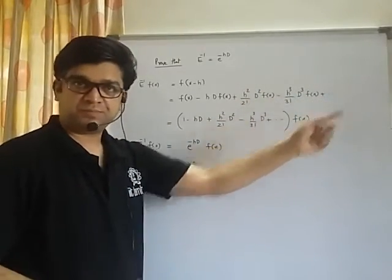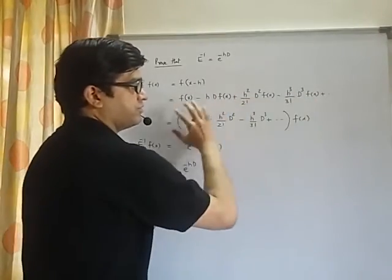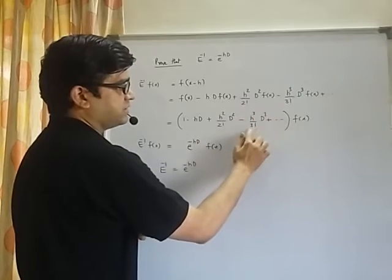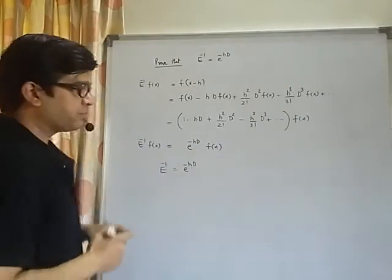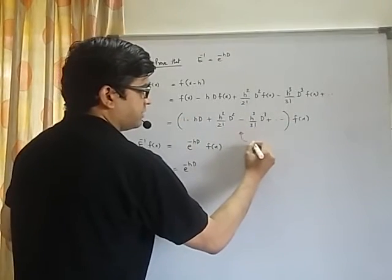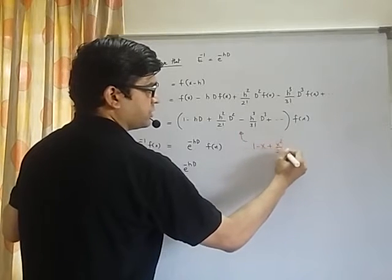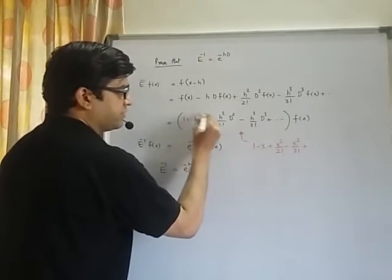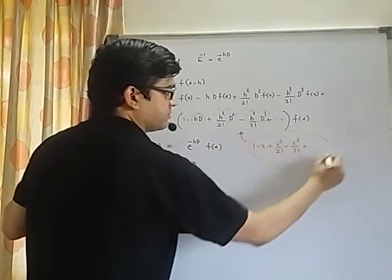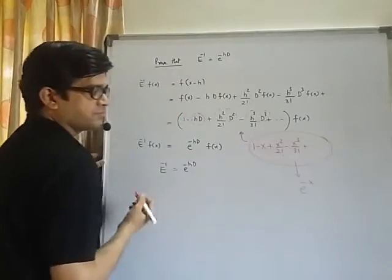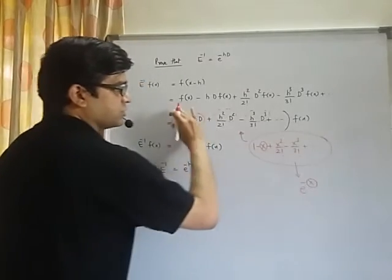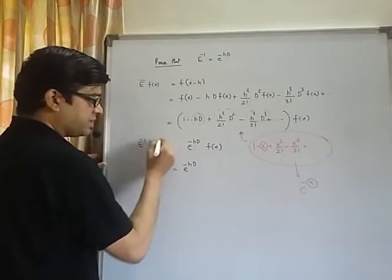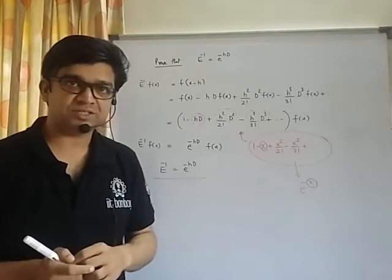Taking f(x) common, we get [1 - hD + (h²D²/2!) - (h³D³/3!) + ...] operating on f(x). The quantity in brackets is comparable to the expansion 1 - x + x²/2! - x³/3! + ..., which is e^(-x), where x = hD. So this entire expression is the expansion of e^(-hD) operating on f(x). Dividing throughout by f(x), E⁻¹ = e^(-hD). Please note this down.